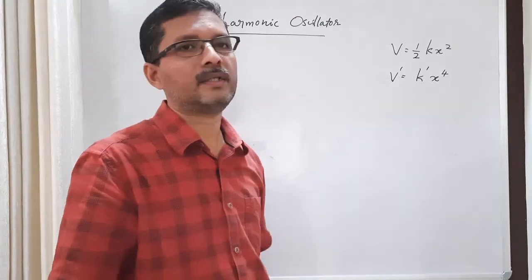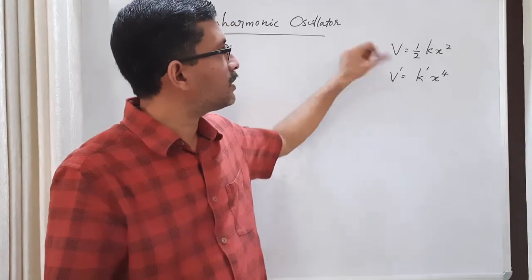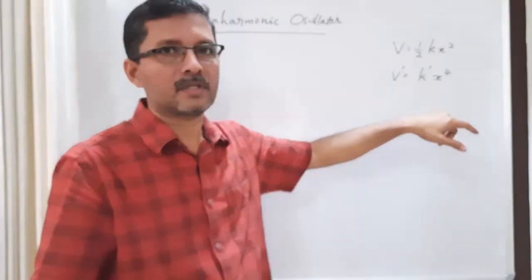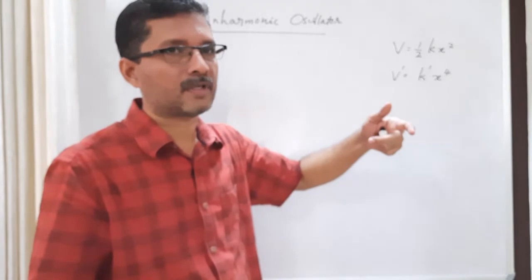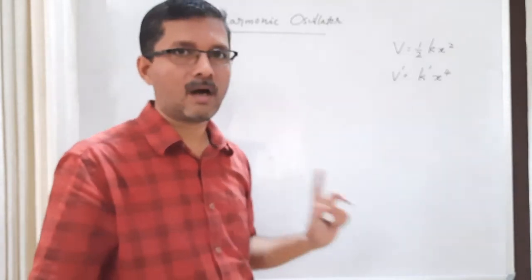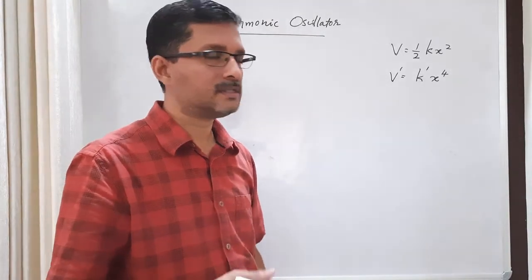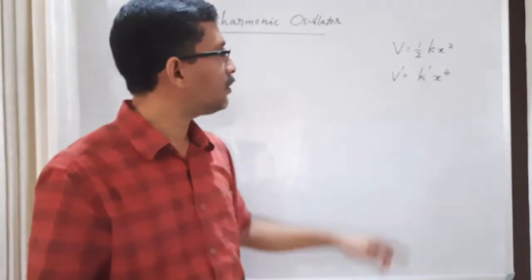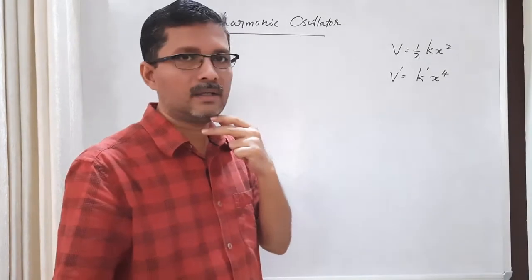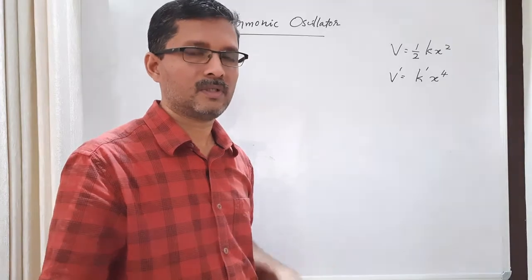We apply a quartic perturbation. Since the total potential is now different from the harmonic oscillator type potential, this is no longer a harmonic oscillator — it is an anharmonic oscillator. The only way to solve it is by an approximation method. An exact solution is not possible.